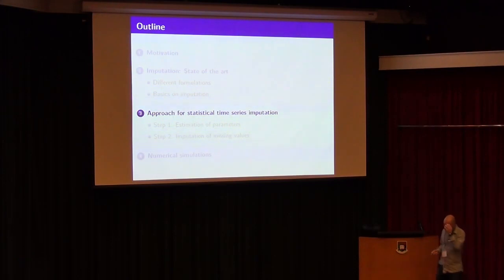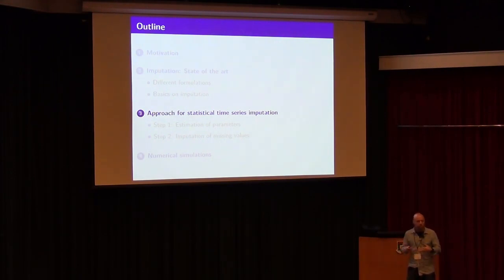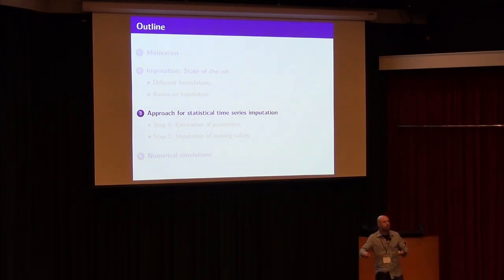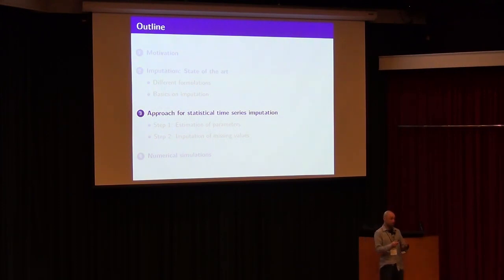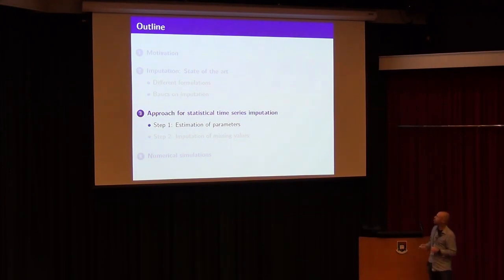In order to do a proper statistical imputation, we can think of two steps. The first step is to characterize the statistical properties of the time series — estimate the parameters of the PDF, characterize it. Once you characterize it, then you can do the imputation. The first step is the most difficult. Actually, once you characterize the time series, the imputation is easy. So let us start from a simple example and then make it more complicated.